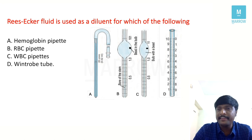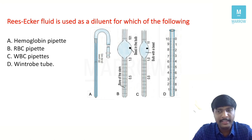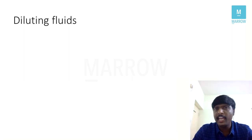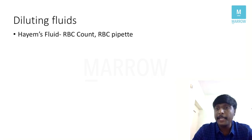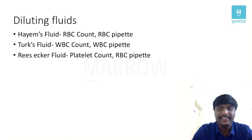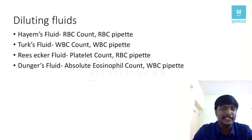Rees-Ecker fluid is used as a diluent for platelet counting, using the RBC pipette. Remember the diluting fluids: Hayem's fluid is for RBC count using the RBC pipette; Turk's fluid is for WBC count using the WBC pipette; Rees-Ecker fluid is for platelet count using the RBC pipette; and Dunger's fluid is for absolute eosinophil count using the WBC pipette.